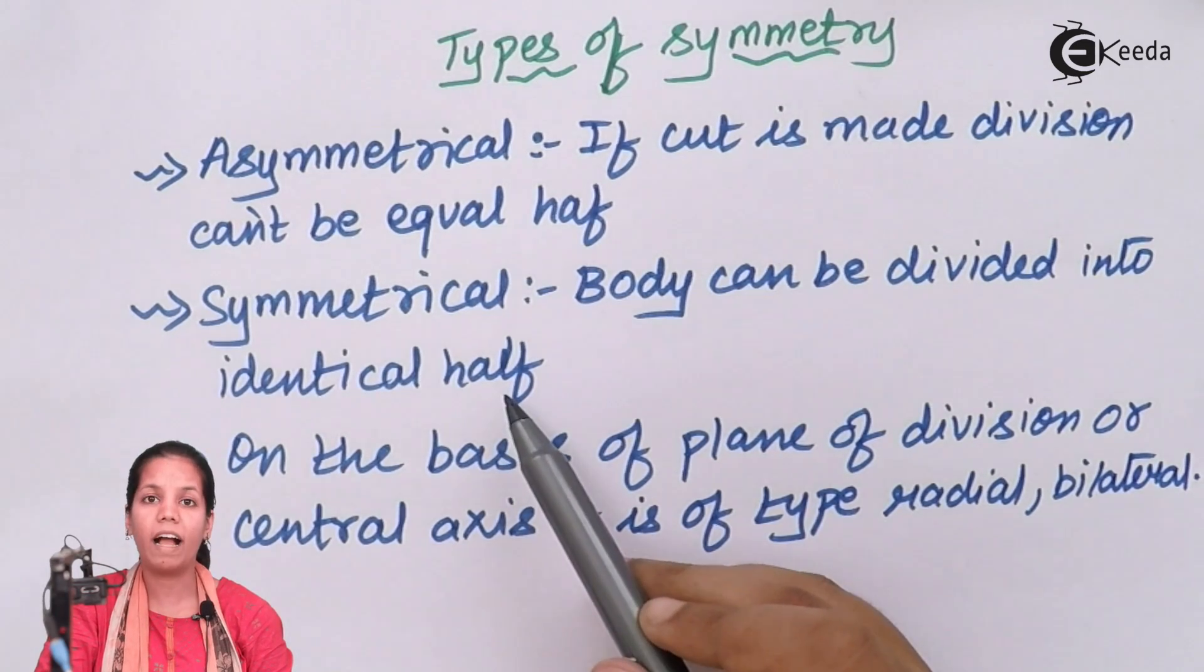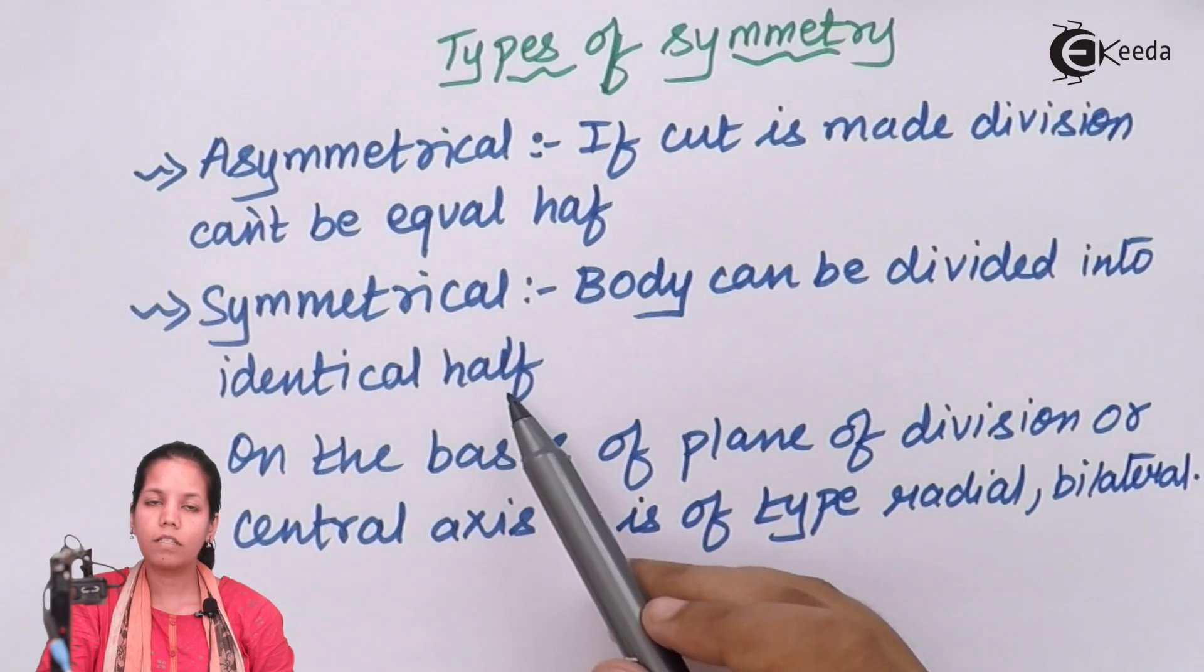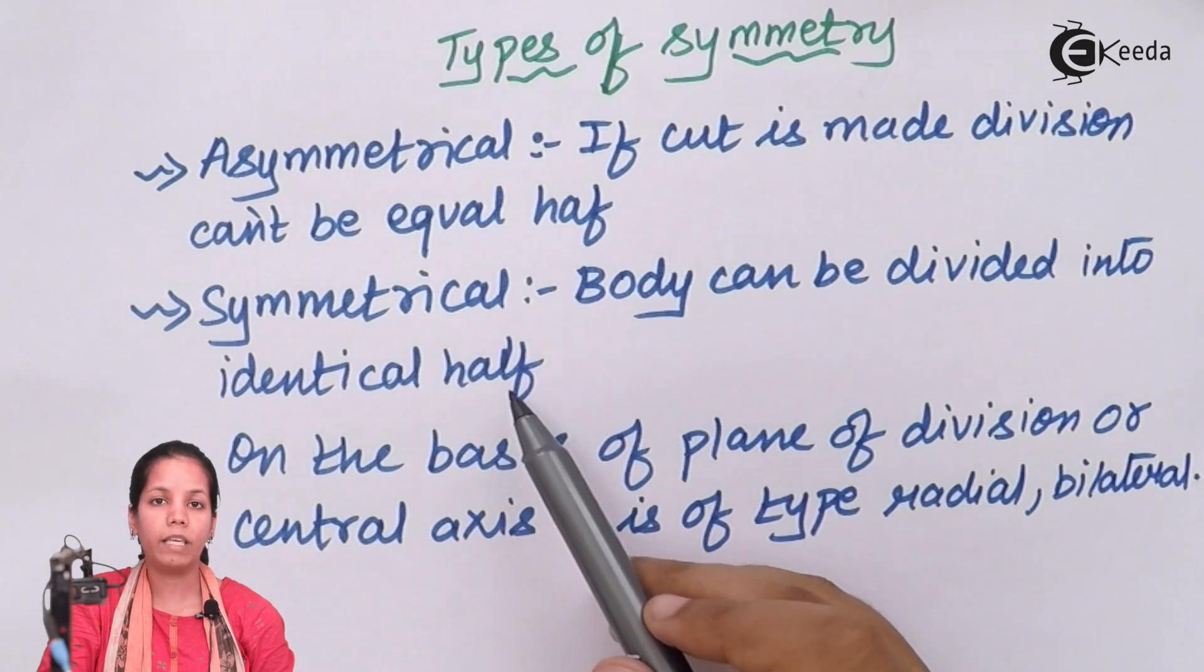Cockroaches are one of them that have this type of symmetry. Whereas asymmetrical organisms' bodies cannot be divided into equal halves.